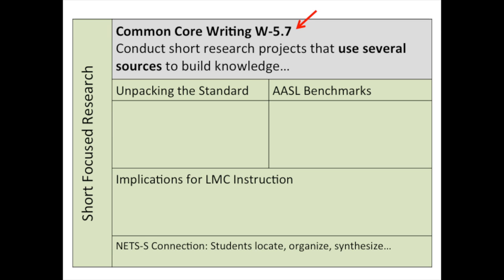The Common Core grade level benchmark is listed in the gray box at the top of the page. In this example, the abbreviation W-5.7 stands for Writing Standard 5th Grade Anchor Standard 7. The benchmark appears in the gray box below the standard. Words in bold font indicate a word or phrase that was changed or added from the previous grade level. The phrase in bold font indicates the expectation that 5th grade students will use several sources when conducting their short research. In 4th grade, students used two or three sources when engaged in short research projects.